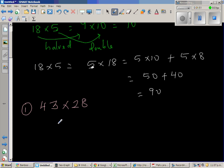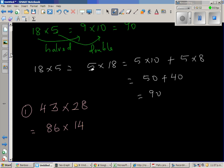I'm going to double this. So double of 43 is 86. So if you double this, you have to halve this. This is 86 times 14.